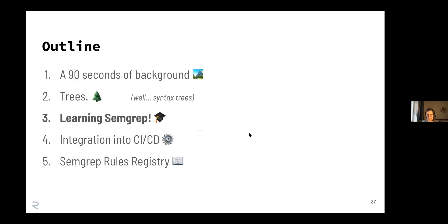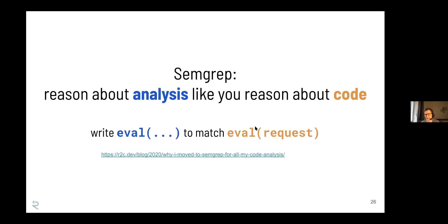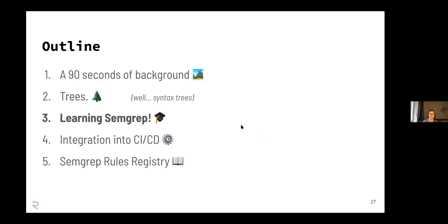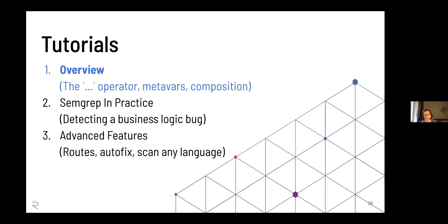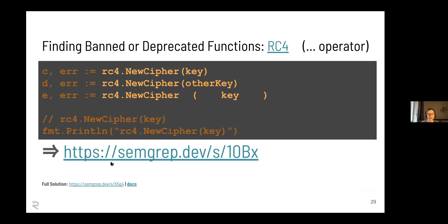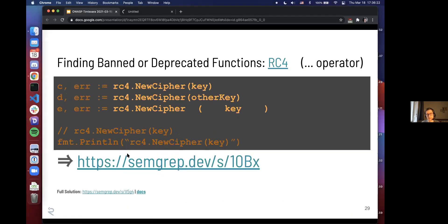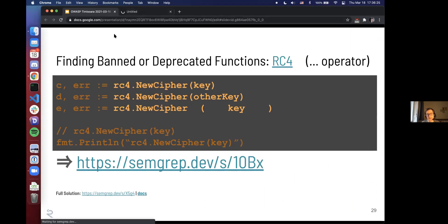Now that we know all about trees, we can go ahead to learning how to use SemGrep, unless there are any questions. Otherwise, I'll move on to the tutorials. Let's have a super simple example - pretty much the eval deny-listing case, where you just don't want to allow people to use eval.